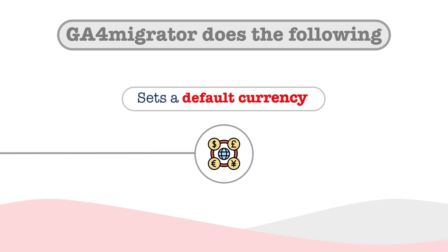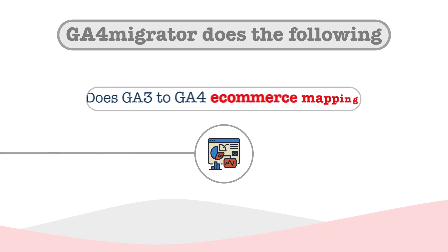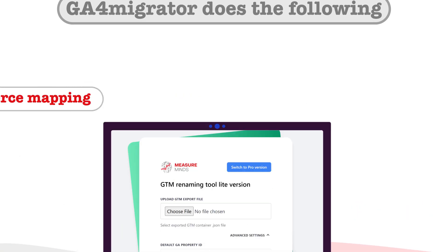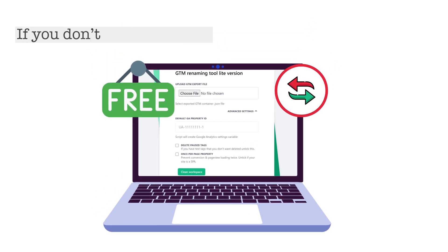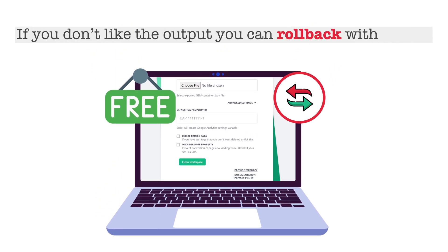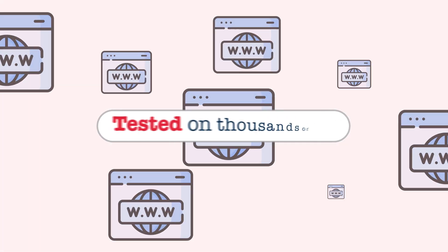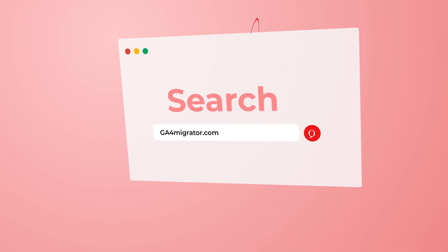It sets a default currency, which is a required field for GA4 e-commerce, and does GA3 to GA4 e-commerce mapping. This tool is absolutely free and reversible. If you don't like the output, you can roll it back with one click. But we don't think you'll need to, as it's been tested on thousands of other sites already.